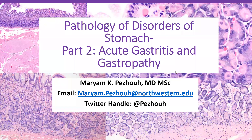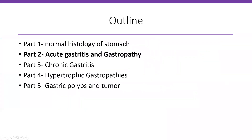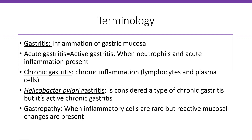Hi everyone. In this part we are going to go over pathology of disorders of stomach — this is part two. We're going to go over acute gastritis and gastropathy. I'm Maryam Peju. The outline of gastric disorders: in part one we talked about normal histology of stomach. Part two covers acute gastritis and gastropathy, part three chronic gastritis, part four hypertrophic gastropathy, and part five polyps and tumors.